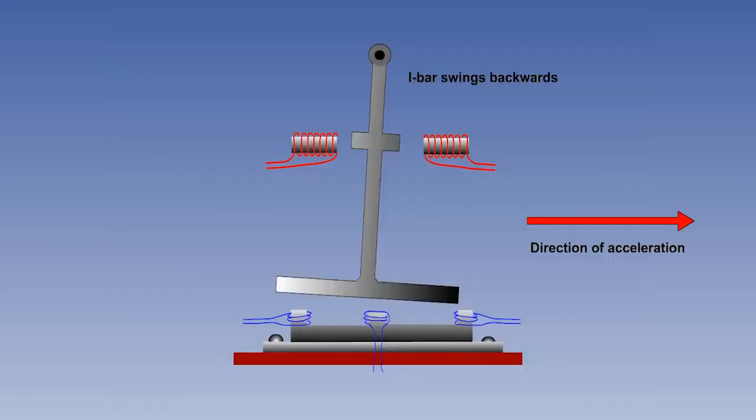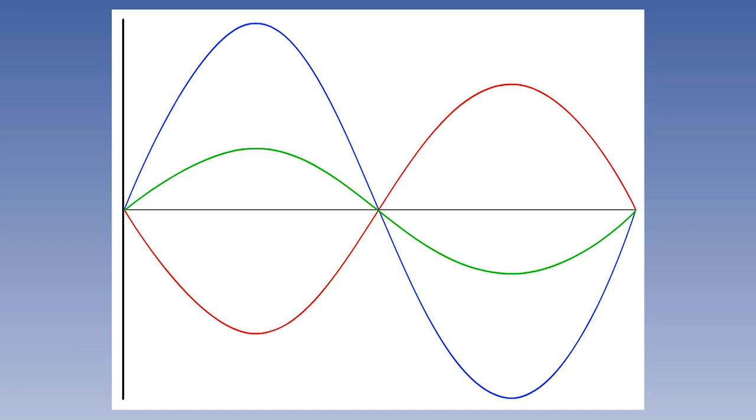However, if the whole accelerometer now experiences an acceleration, in this example to the right, the pendulum will swing to the left. Now the gaps at each leg of the E bar are not the same, because the I bar has been displaced. Therefore the induction at each end will be different. This will affect the amplitude, but not the polarity or phase. The positive and negatives will no longer cancel out, and there will be a resultant, which will be a new sine wave.